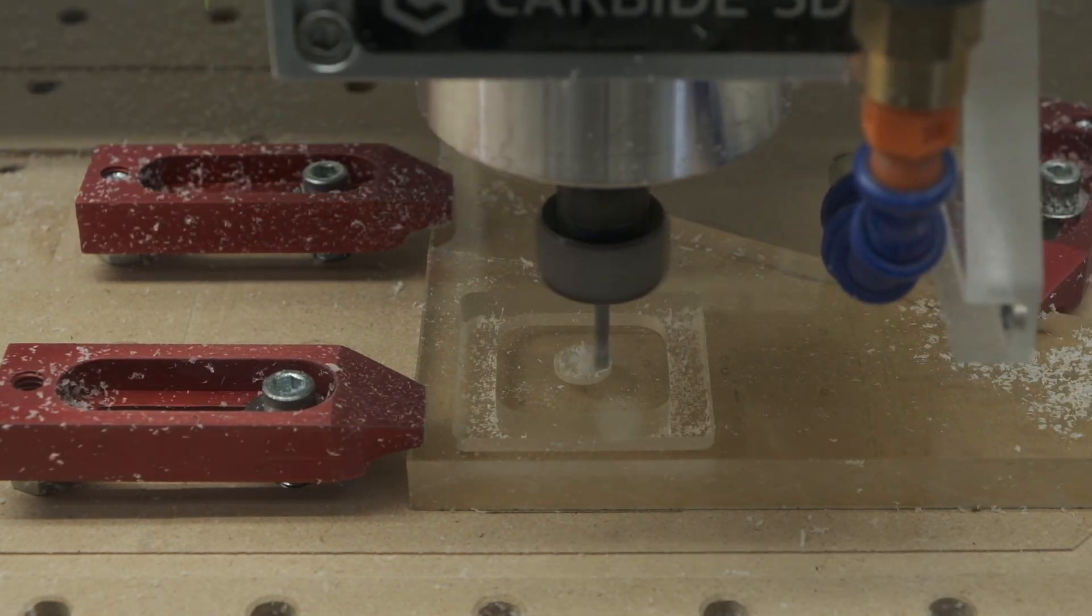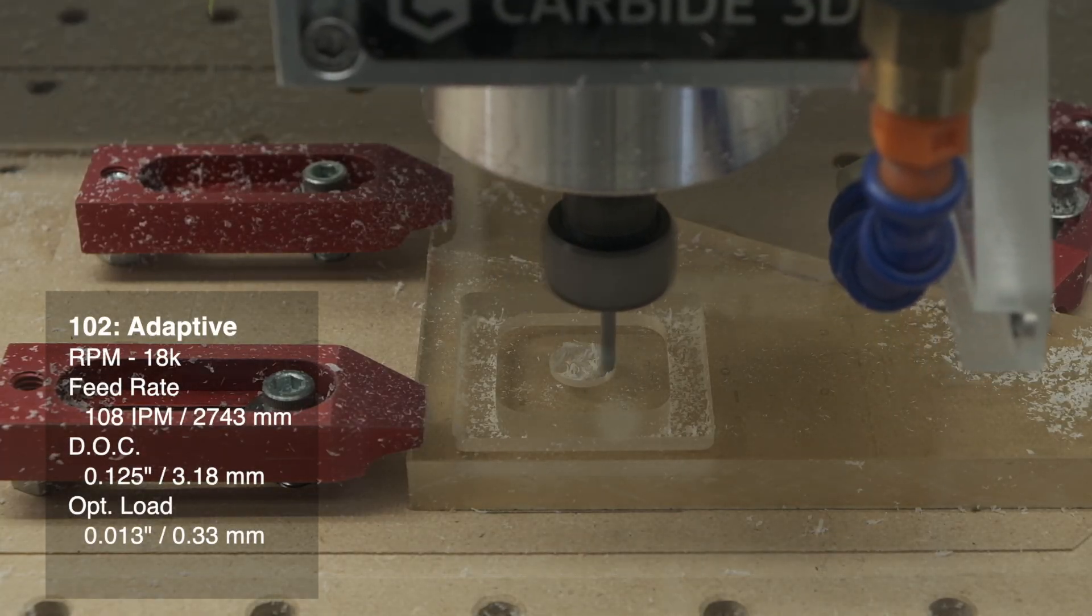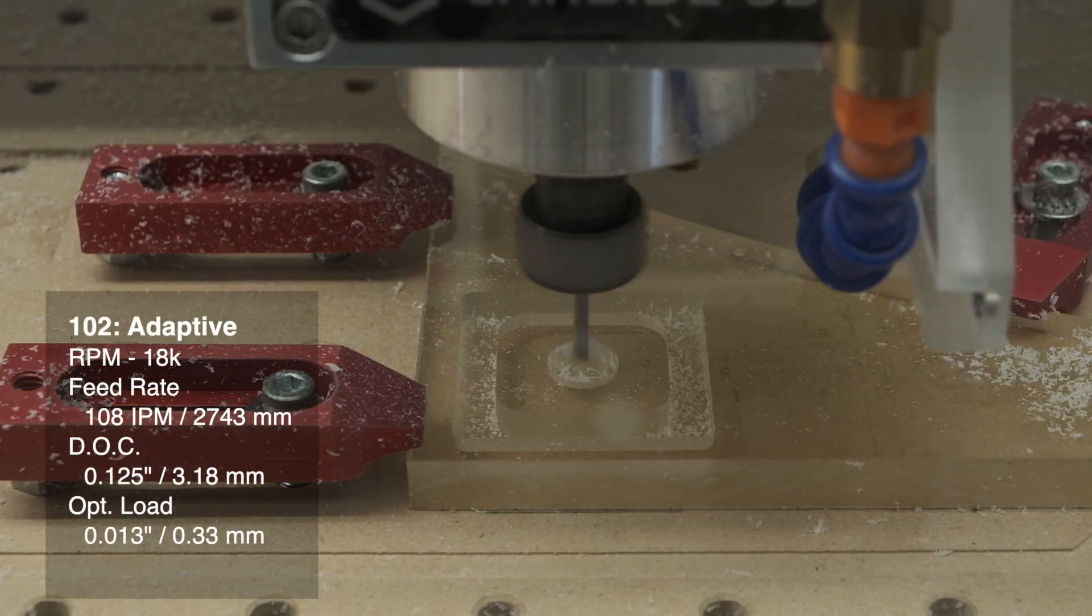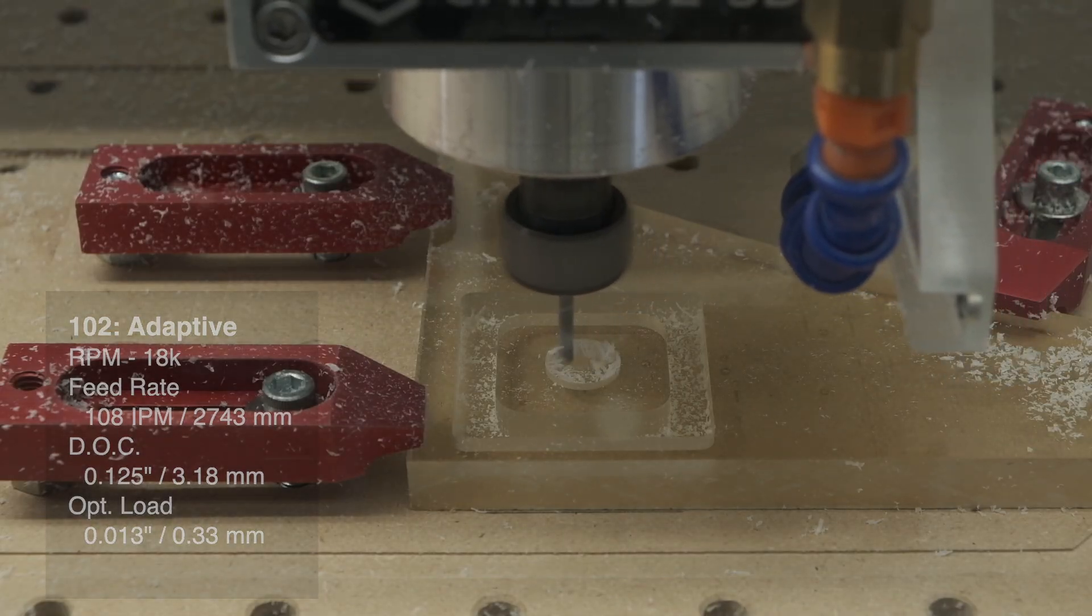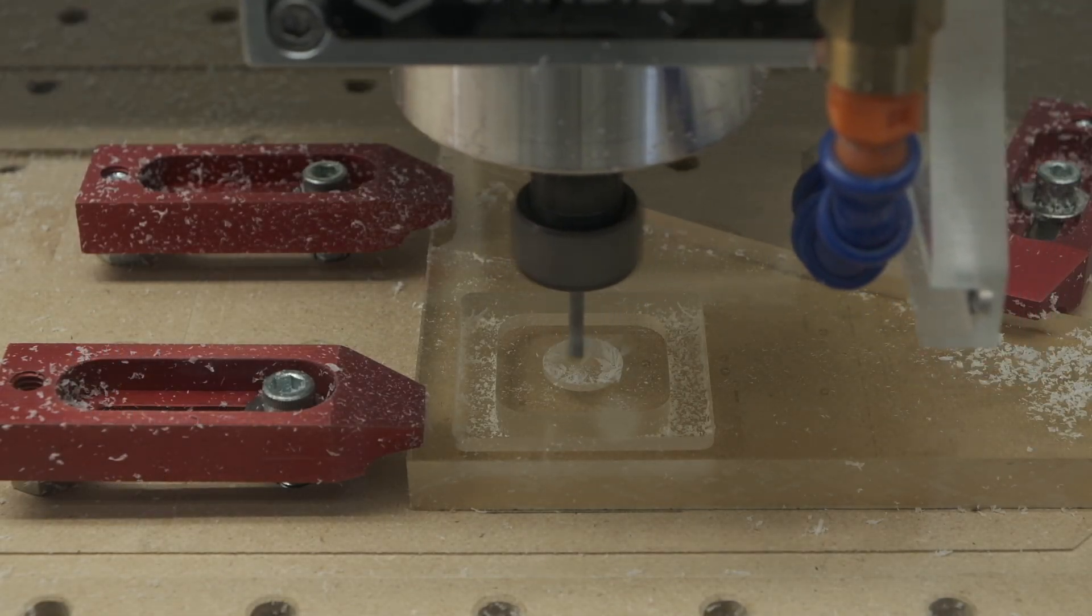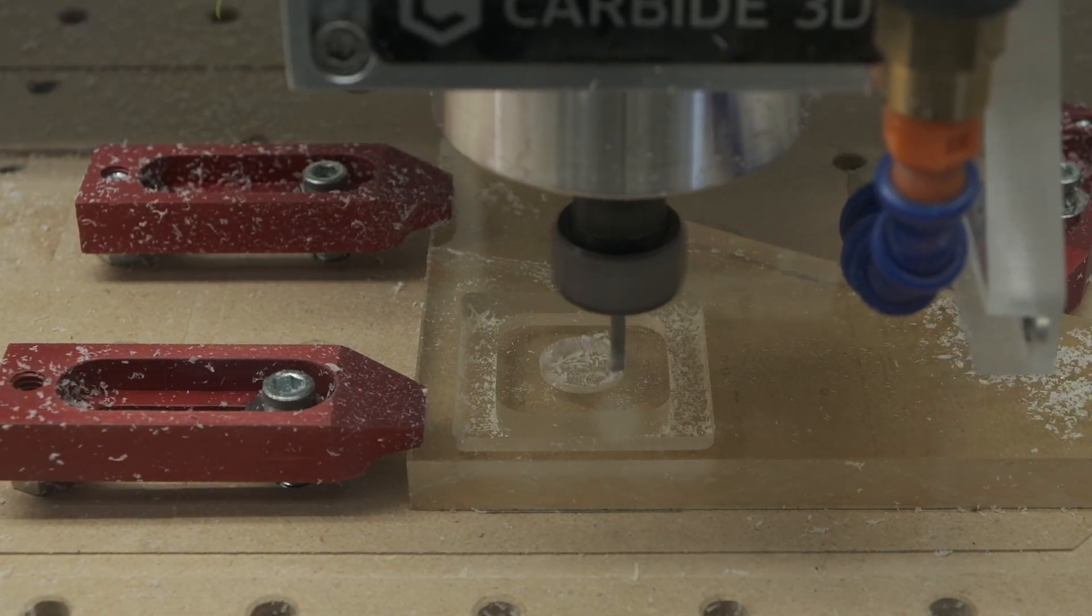An adaptive toolpath might go something like 18,000 RPM, 108 inches per minute, an eighth-inch depth of cut, and a 0.013 inch optimal load. Again, this is probably quite conservative, but it is supposed to be a safe place to start.